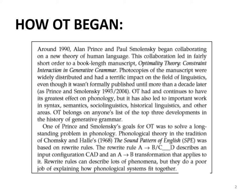Around 1990, two professors, Alan Prince and Paul Smolensky — remember these two names, they are very important. Alan Prince is a professor at Rutgers University in New Jersey, and Paul Smolensky is a professor of cognitive science at Johns Hopkins University in Maryland. Both these universities are located in the United States, and they began to collaborate.